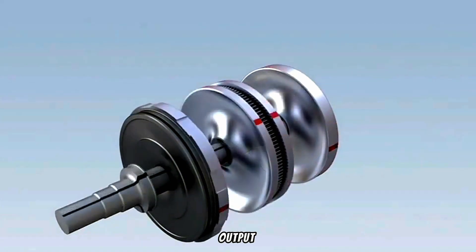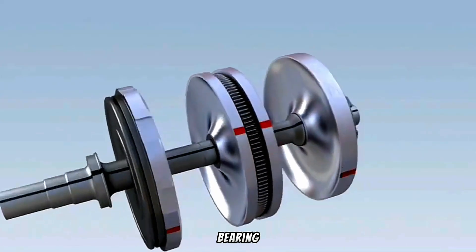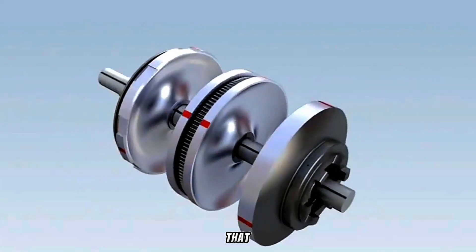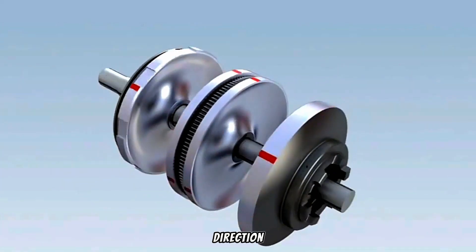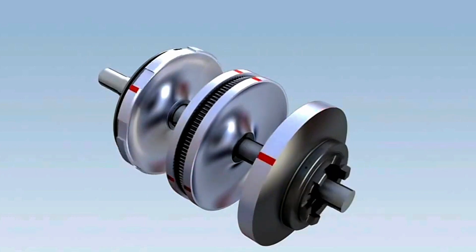A double-sided output disc is supported on a bearing at the centre of the shaft, so that it is free to rotate about the shaft, but in the opposite direction. The output disc drives a load, such as the road wheels of a car or a supercharger.